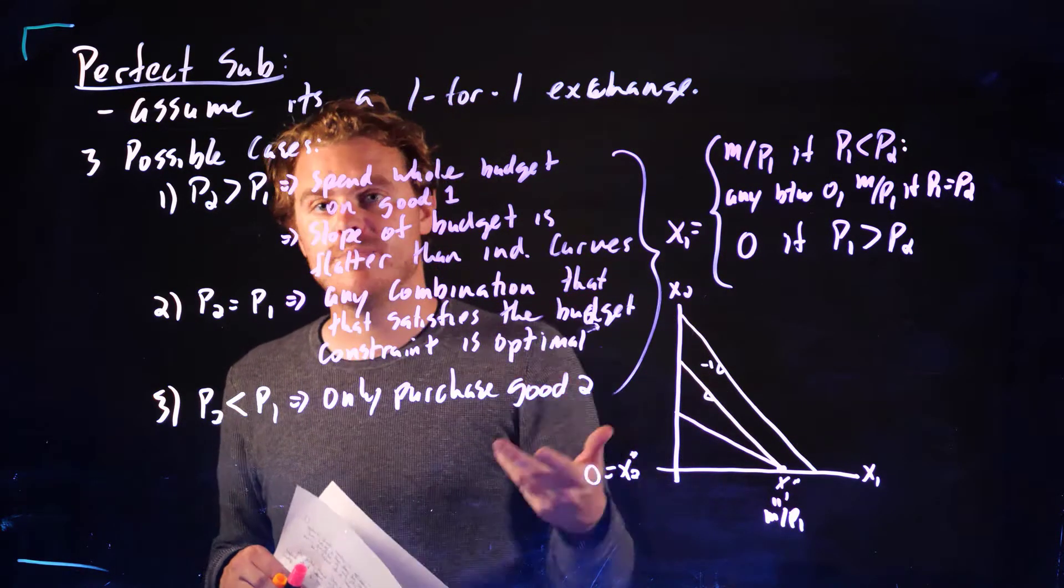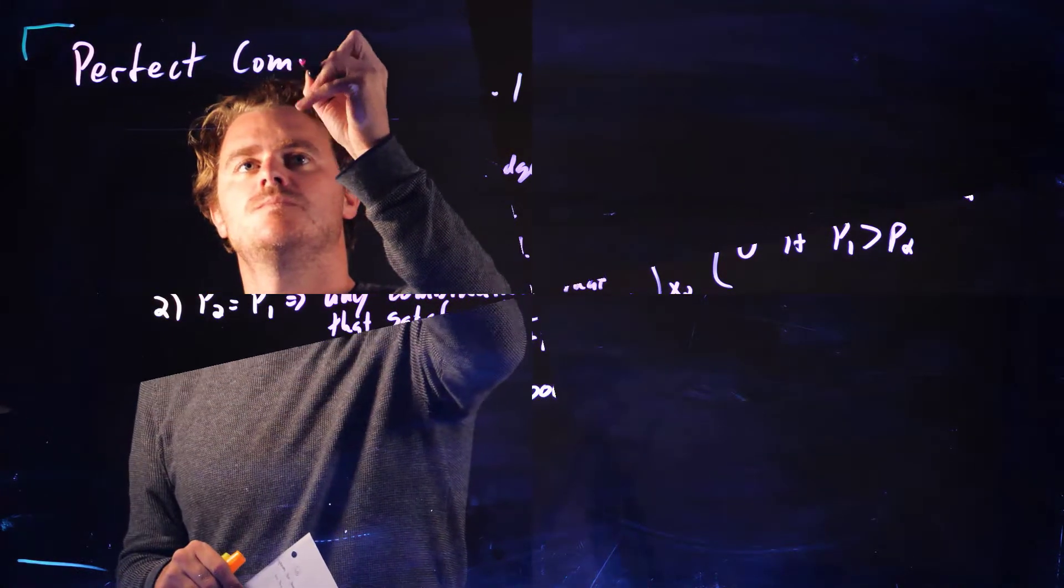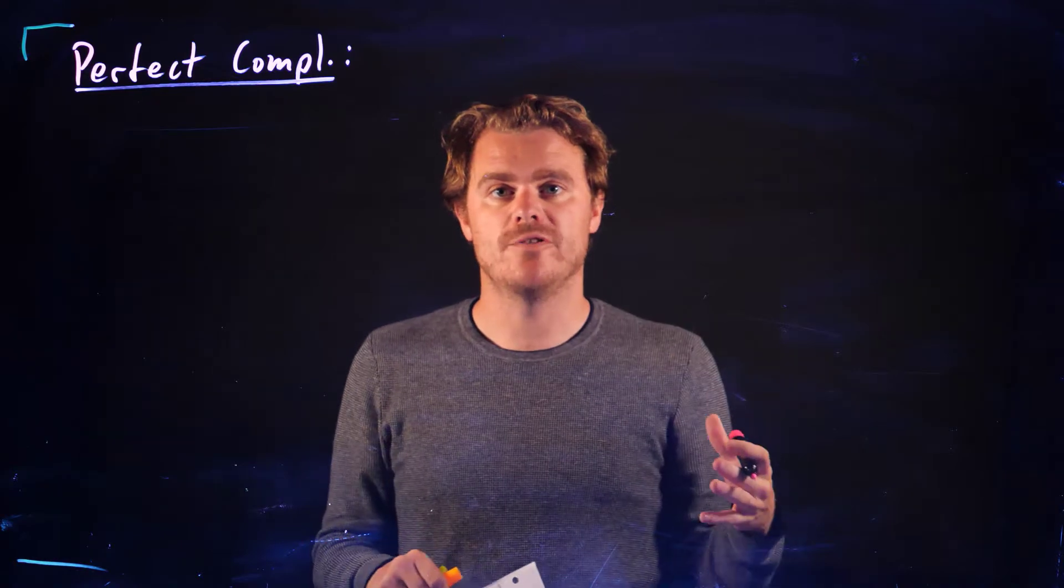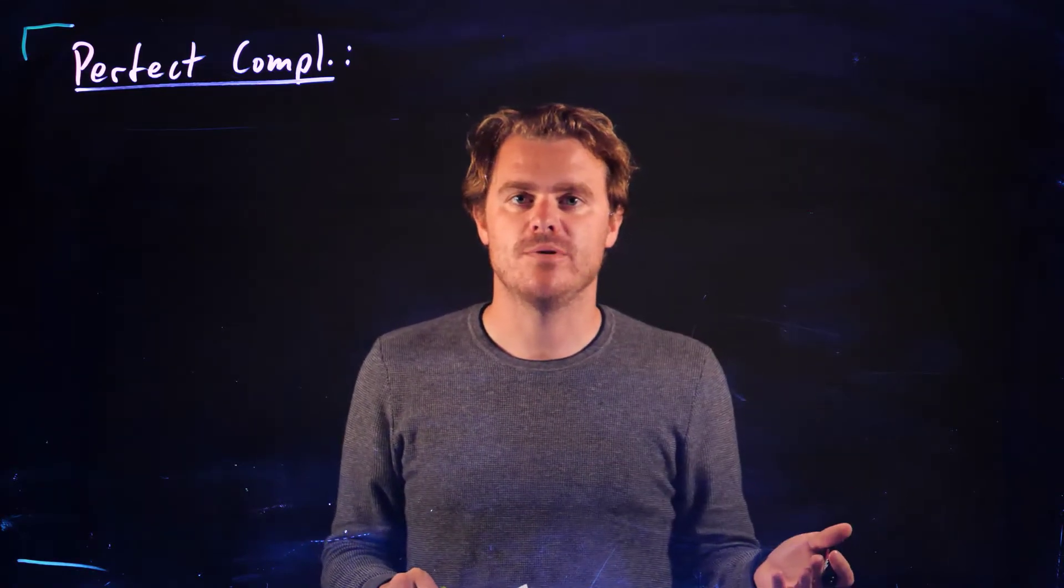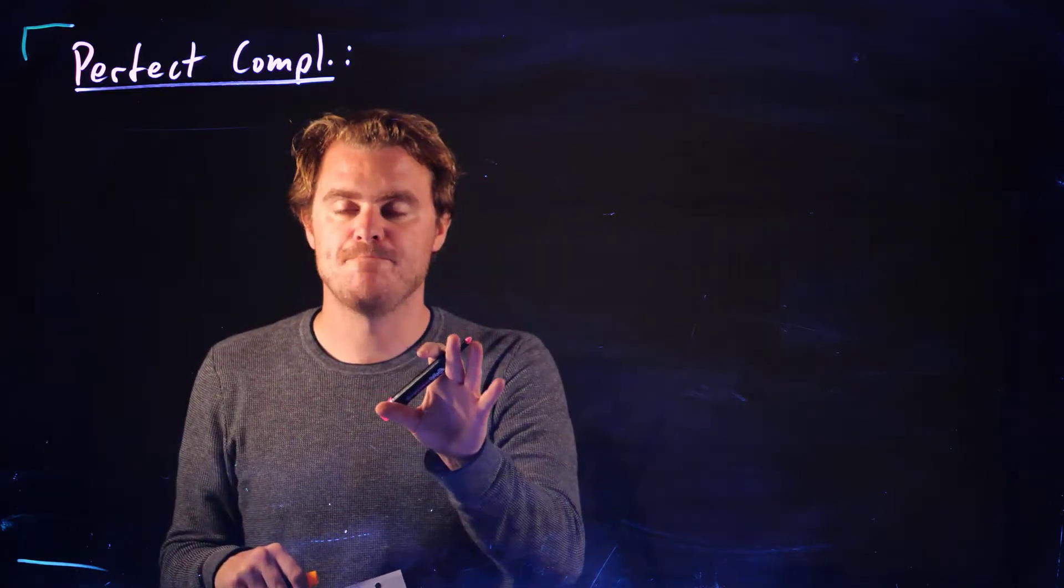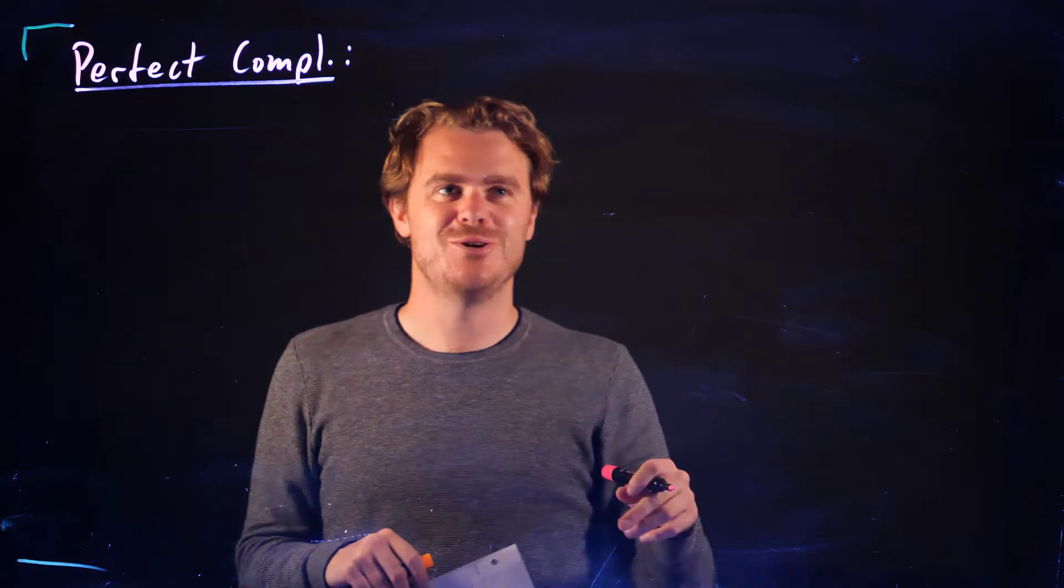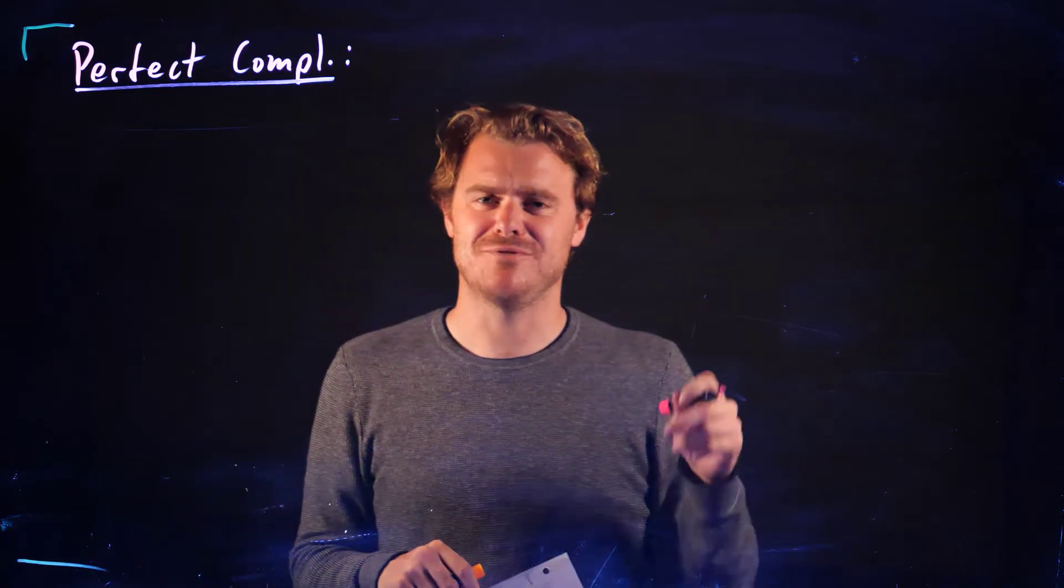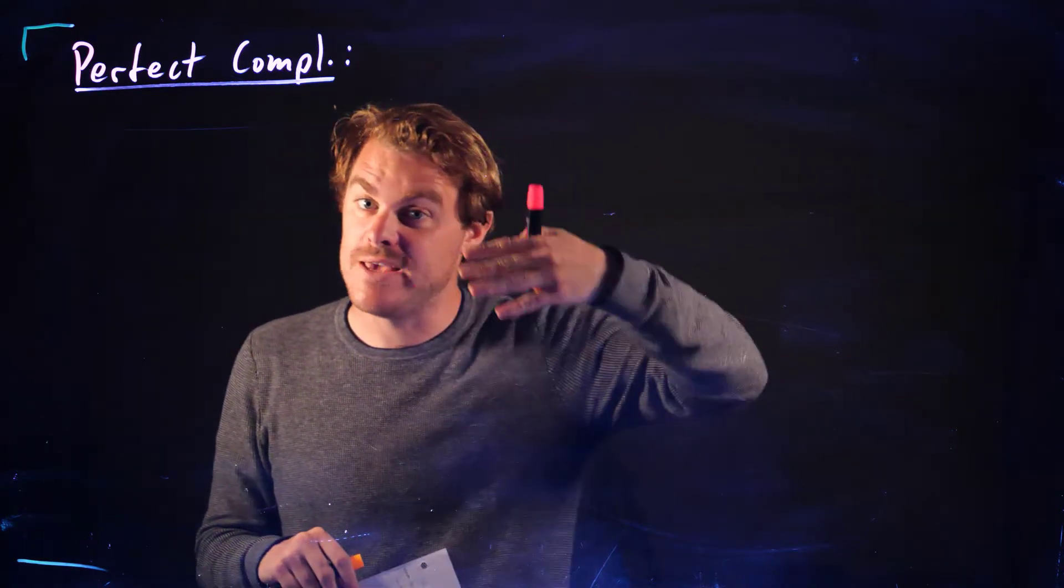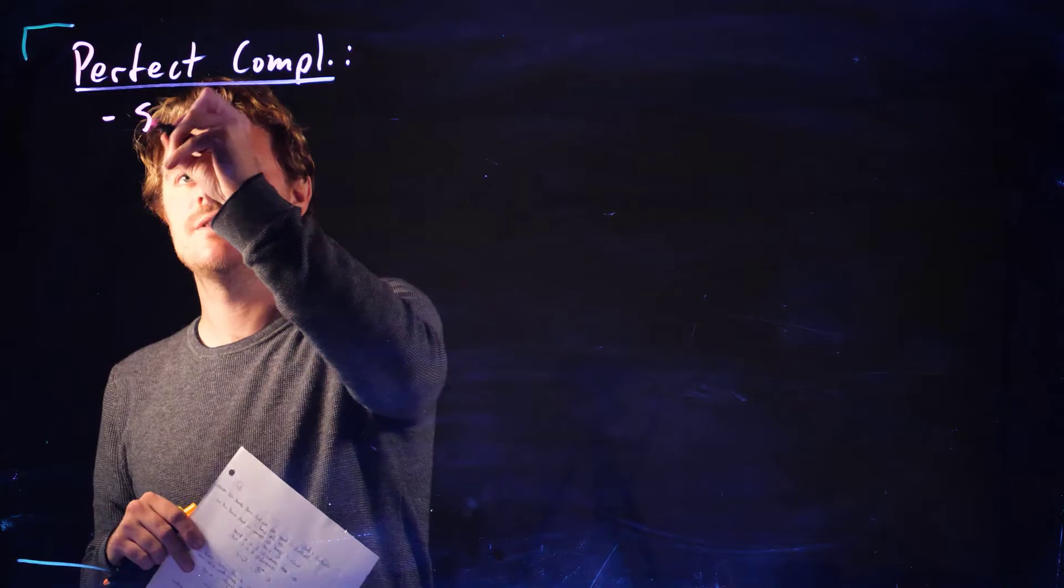So that's how the demand functions work for perfect substitutes. Now let's move on to perfect complements. And again, we're going to look at the simplest case possible. We want the equal amount of both goods. So remember with left and right shoes, for example, we want equal amounts of each of the shoes.